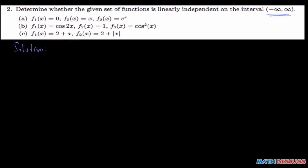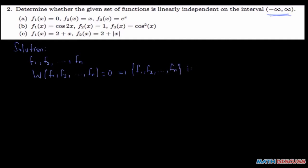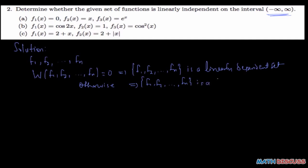The first thing to note is: to check for linear independency, if you are given a set of n functions — f1, f2, up to fn — if the Wronskian of all of them gives you zero, it implies that the set f1, f2, up to fn is a linearly dependent set. Otherwise, if this condition does not hold, it implies that the set f1, f2, up to fn is linearly independent.